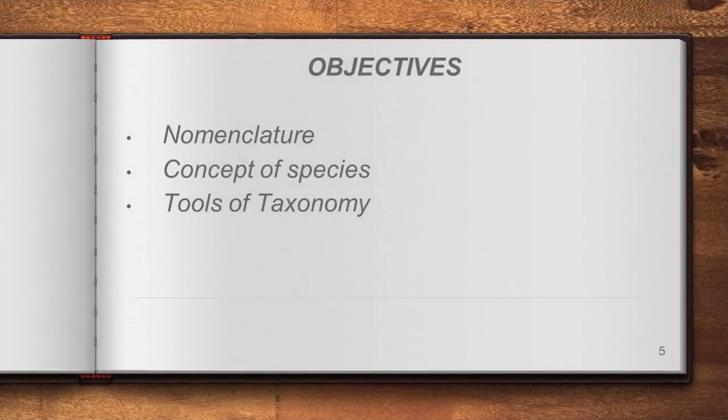Today's class we are going to discuss three topics: nomenclature, concept of species, and tools of taxonomy. Let us see them one by one.